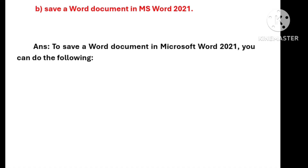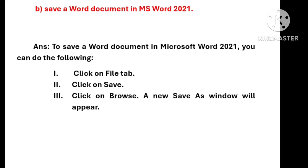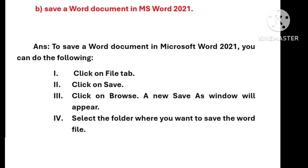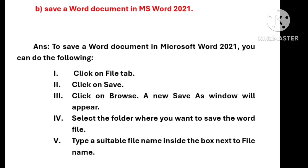To save a word document in Microsoft Word 2021 you can do the following: click on File tab, then click on Save, click on Browse — a new Save As window will appear. Select the folder where you want to save the word file. Type a suitable file name inside the box next to File Name, and then click on Save button.